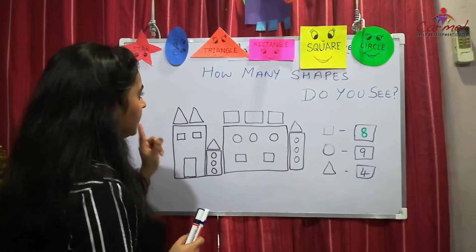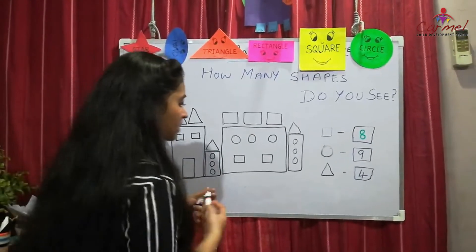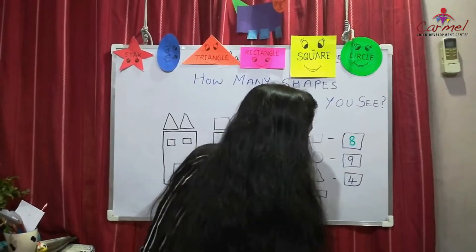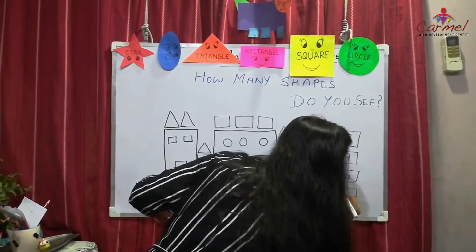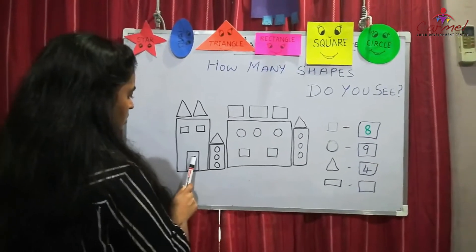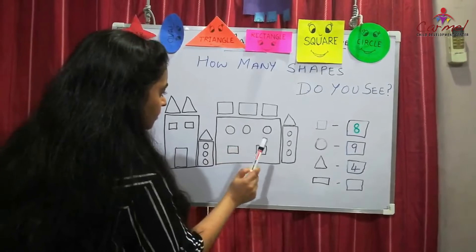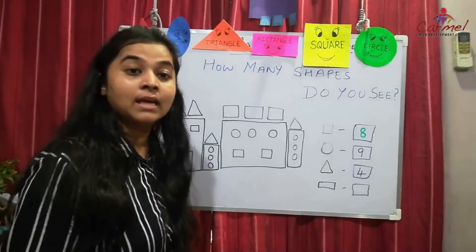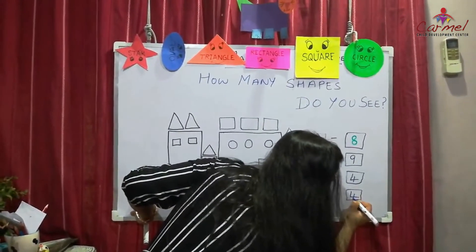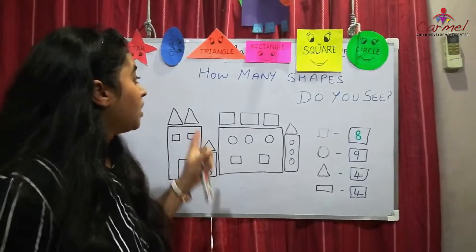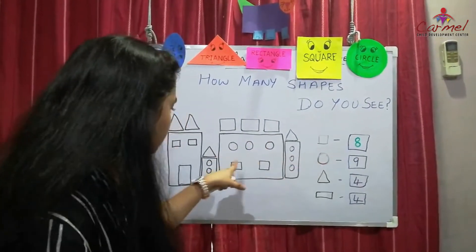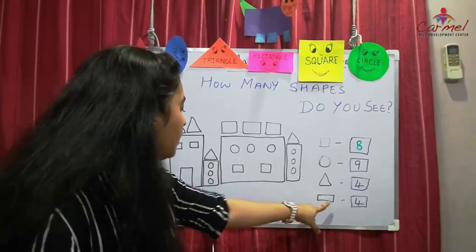Now let's count how many rectangles are there. Count: one, two, three, four. There are 4 rectangles. Write 4 inside the box. So in total, there are 8 squares, 9 circles, 4 triangles, and 4 rectangles.